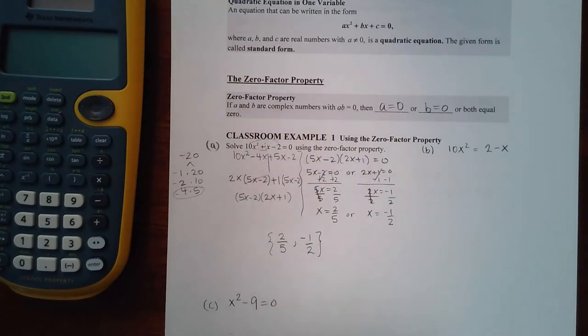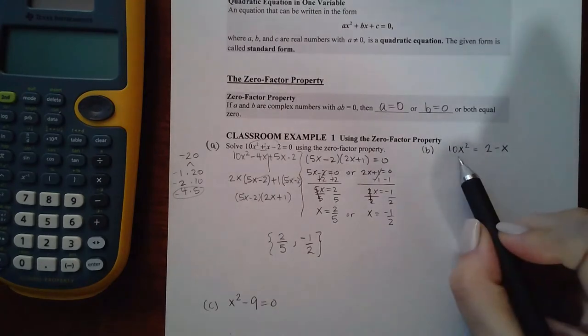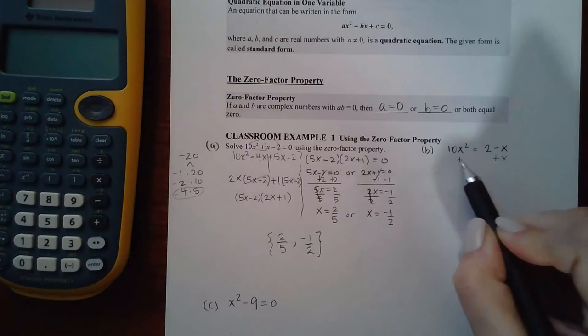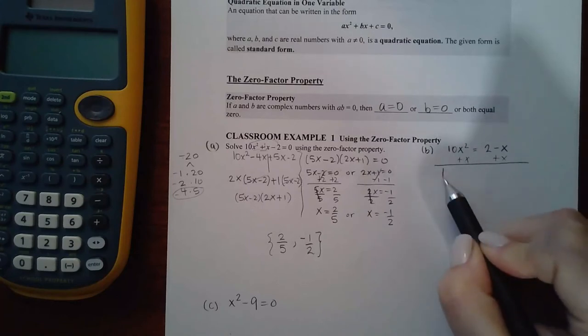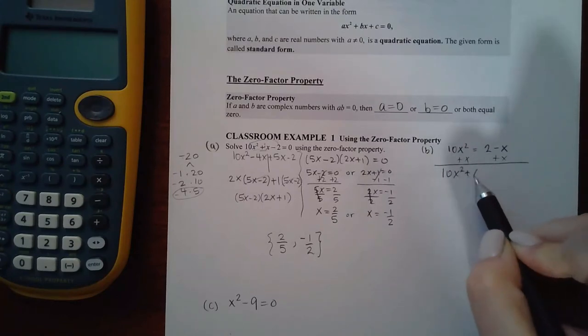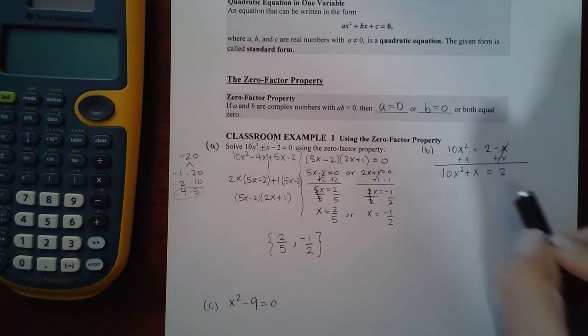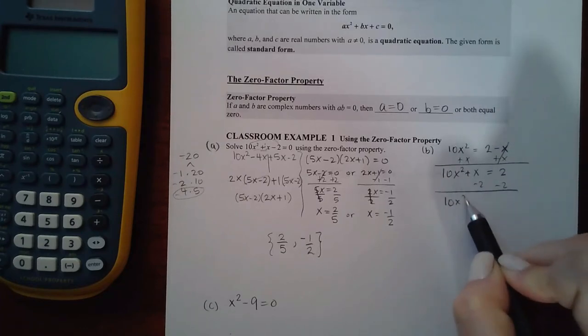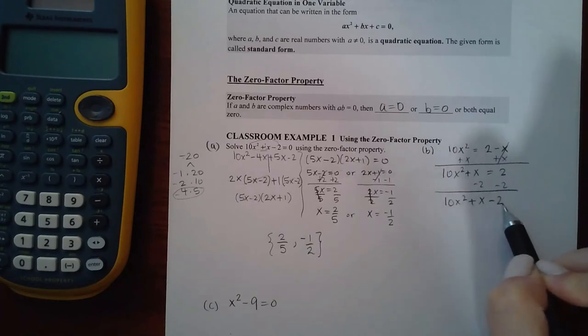Mine's already positive, so that means I'm going to actually add x to both sides, so I get 10x² plus x, and then I'm going to minus 2 to both sides, so I get 10x² plus x minus 2 equal to 0.